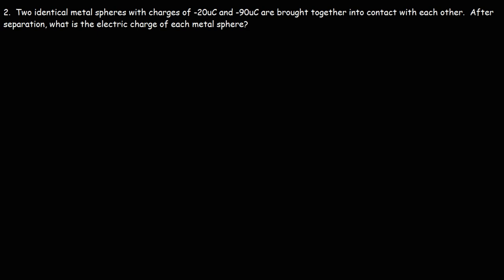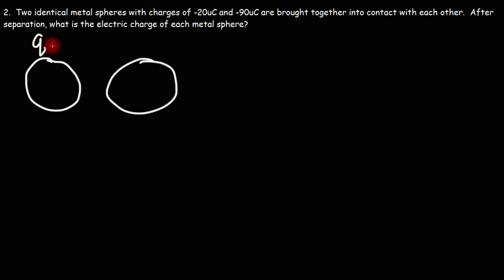Two identical metal spheres with charges of -20 microcoulombs and -90 microcoulombs are brought together into contact with each other. After separation, what is the electric charge of each metal sphere?